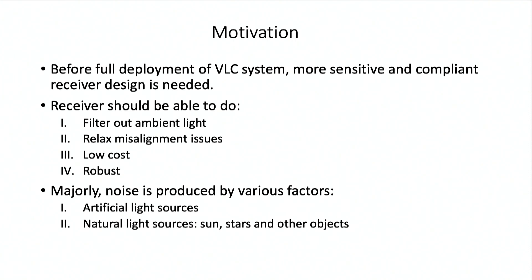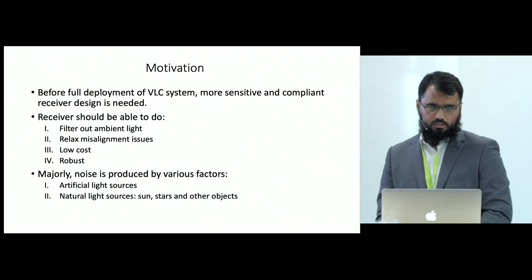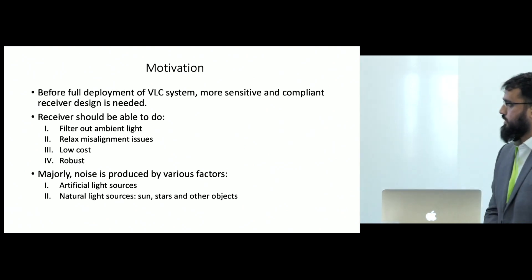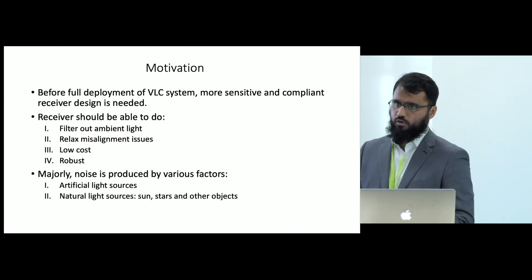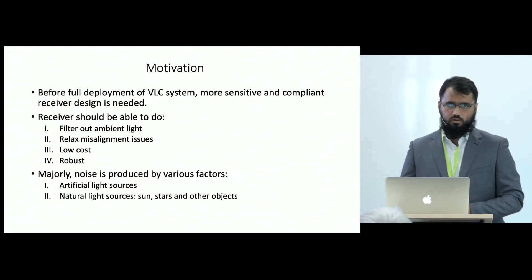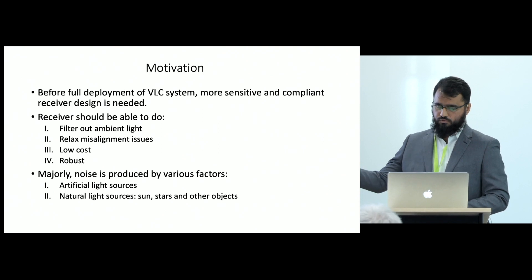Noise enters the system from two sources. The first is artificial light sources — we have already implemented LEDs in building infrastructure, on roads, on traffic signals, and in car lights. The second is natural light sources, which include light coming from the sun, stars, and other objects. So we have to filter out the ambient light and noise photons coming from these different light sources.